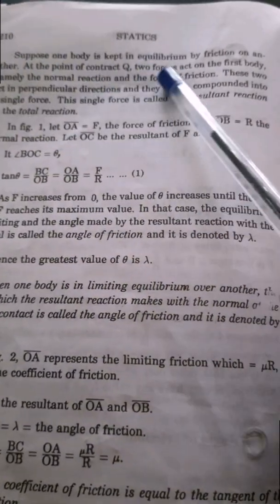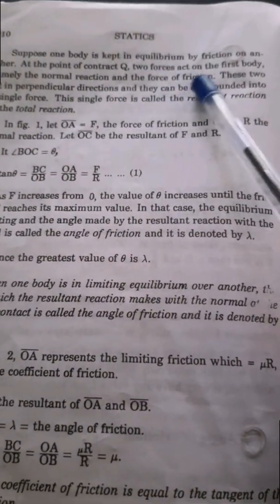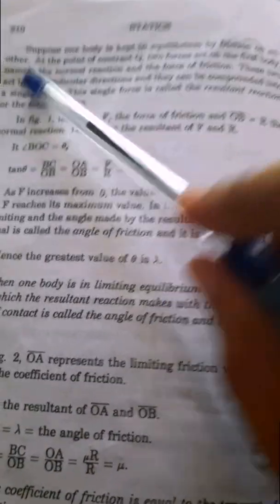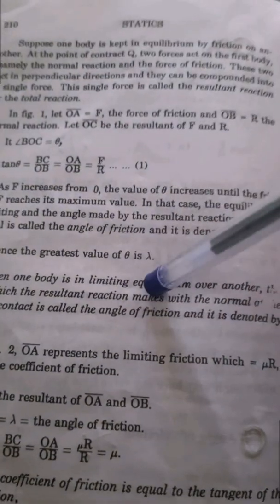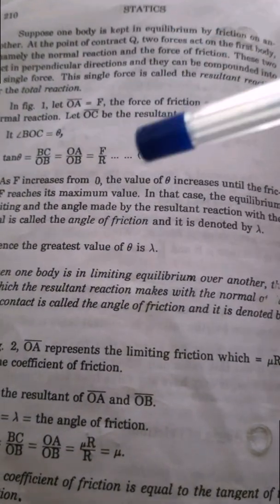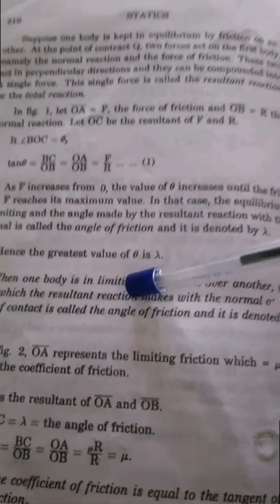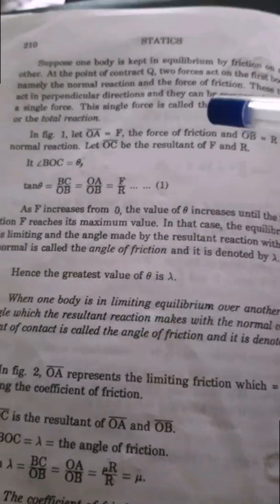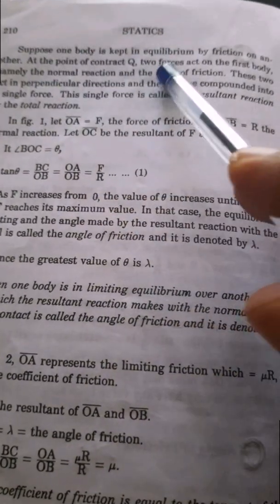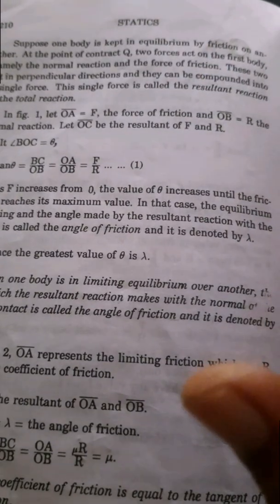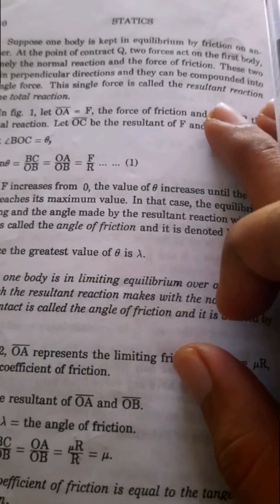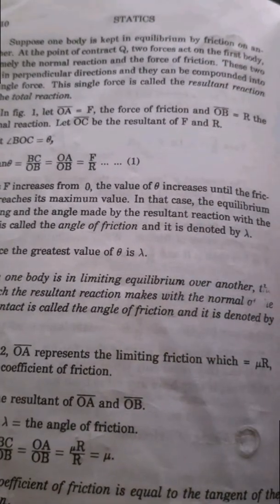Suppose one body is kept in equilibrium by friction on another. So there are two bodies being kept in equilibrium by friction on another. One body is kept in equilibrium by friction.